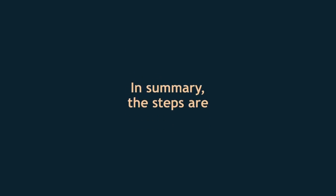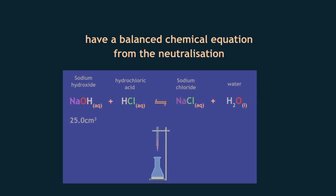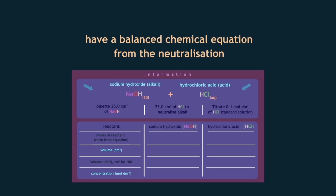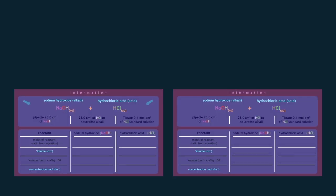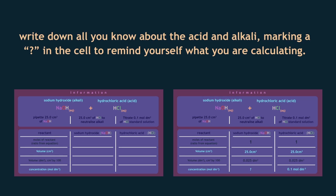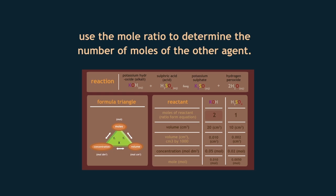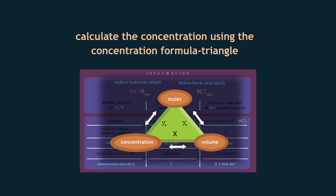In summary, the steps are: (1) have a balanced chemical equation for the neutralization; (2) set up the table as shown; (3) write down all you know about the acid and alkali, marking a question mark for the unknown; (4) use the concentration formula to find moles from known volume and concentration; (5) use the mole ratio to determine moles of the other reagent; and (6) calculate the concentration using the formula triangle.